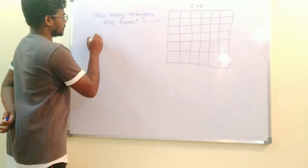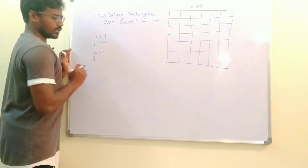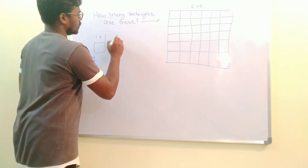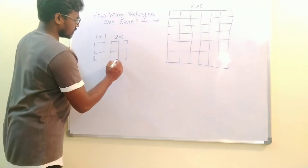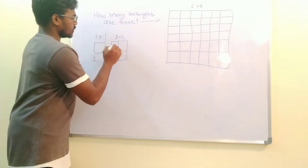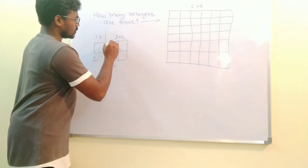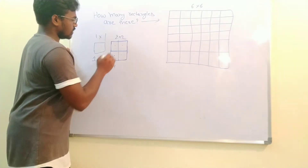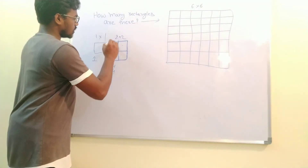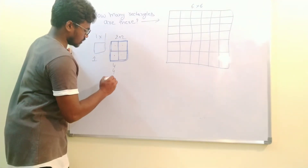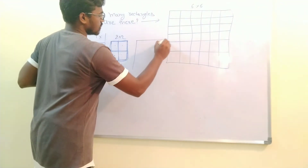In mathematics, if you look at a bigger problem from a smaller angle it becomes easier. So let's break it down. A 1×1 grid has only one box, so there is clearly only one rectangle. Now let's take a 2×2 grid with two rows and two columns. Every single box is a rectangle — that's four. Combinations of two boxes give four more rectangles, and the full outer box is one more, giving us nine rectangles total in the 2×2 grid.